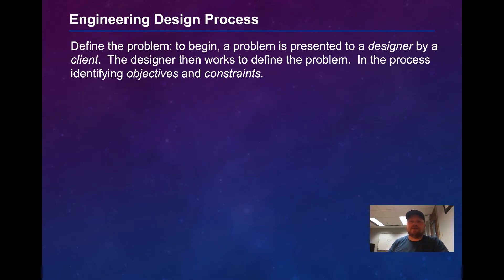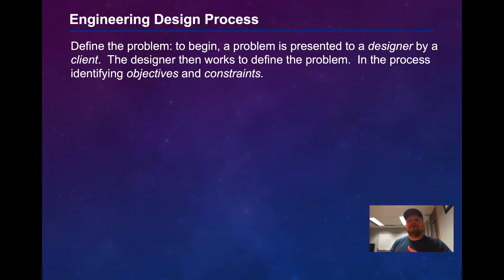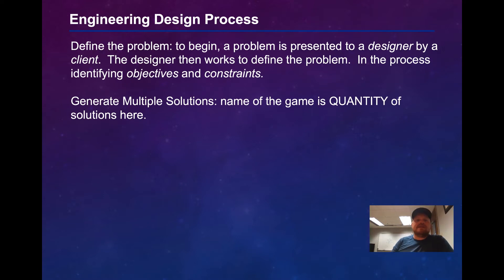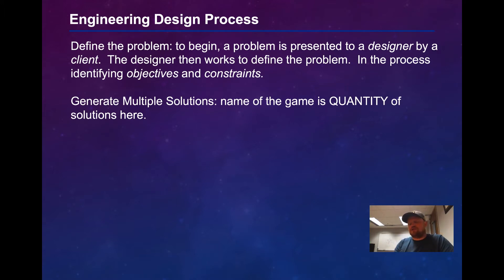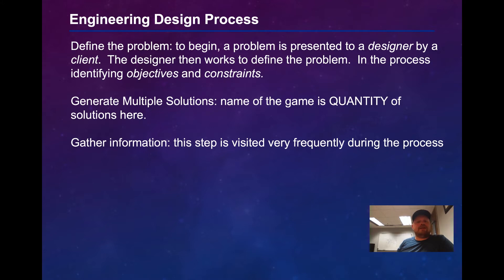The first step in the engineering design process is to define the problem. A problem is something that is presented to the designer by a client, and then the designer works to tease out what the actual problem is. In the process of defining the problem, the designer will identify what objectives and constraints go into the design process. The second step is to generate multiple solutions — we aim to generate as many ideas as possible, rather than focusing on whether those ideas necessarily meet all the constraints and objectives.